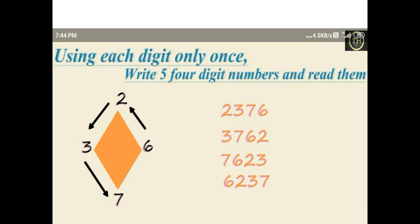Next: six, two, three, seven. Read this number: six thousand two hundred and thirty seven.